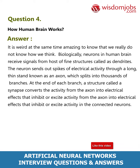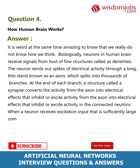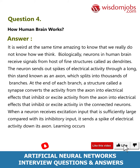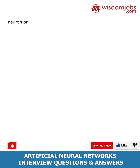When a neuron receives excitatory input that is sufficiently large compared with its inhibitory input, it sends a spike of electrical activity down its axon. Learning occurs by changing the effectiveness of the synapses so that the influence of one neuron on another changes.